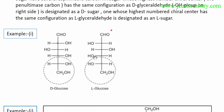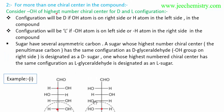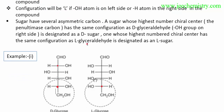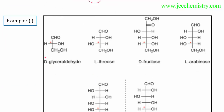For compounds having more than one chiral center, we have to focus on the last chiral center — meaning the chiral center at the highest number position, i.e., the end chiral center. For DL configuration, we consider the highest-numbered chiral center. In this compound with four chiral centers, the fourth chiral center is considered. If the OH group is on the right side, the configuration will be D.